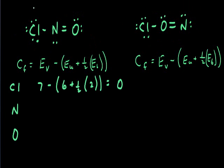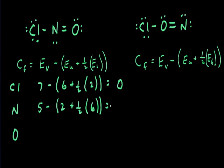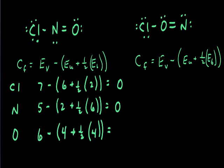Calculating for our chlorine atom, we get a formal charge of zero. For our oxygen atom in this structure, we also get a formal charge of zero. Calculating for our oxygen item in this structure, we also get a formal charge value of zero.